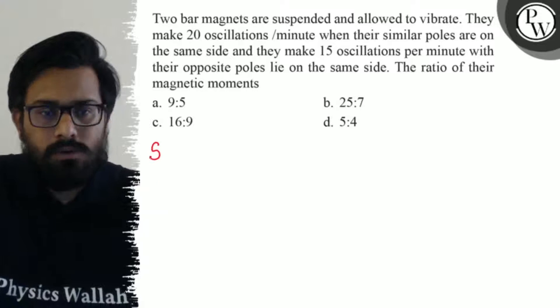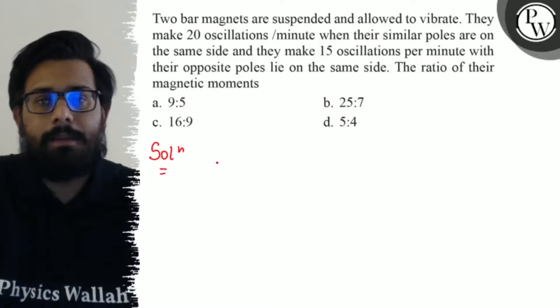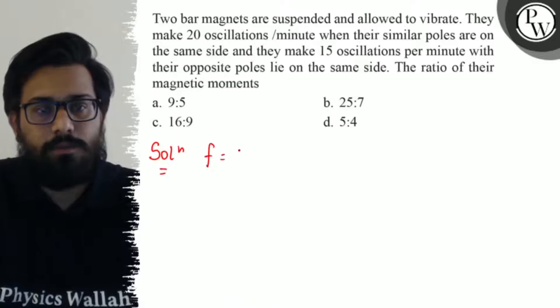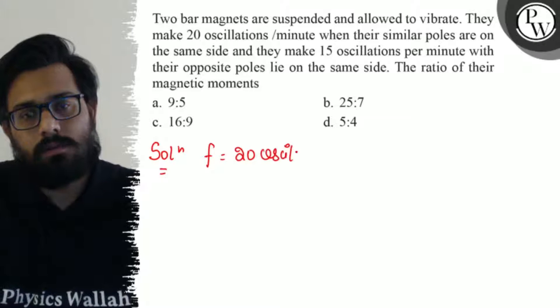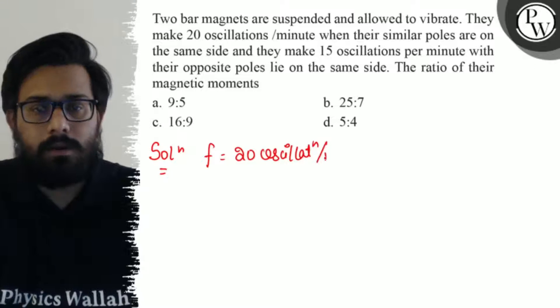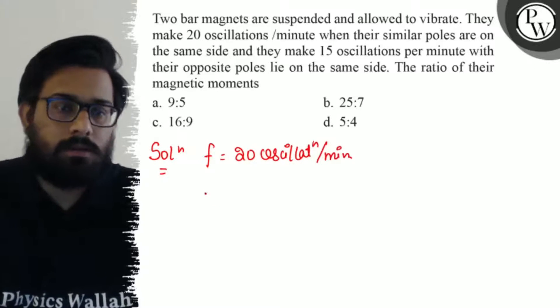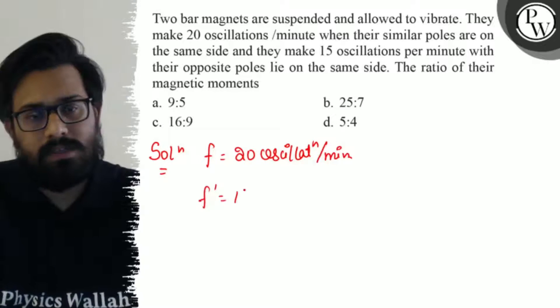So here in this question, initially we have the frequency of 20 oscillations per minute, okay? And in your second case you will have the value frequency as 15 oscillations per minute.